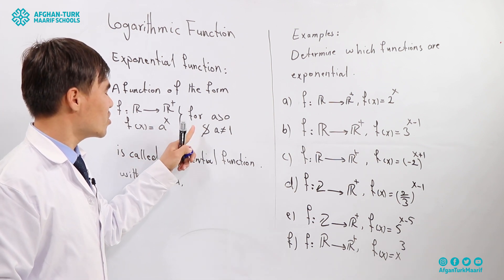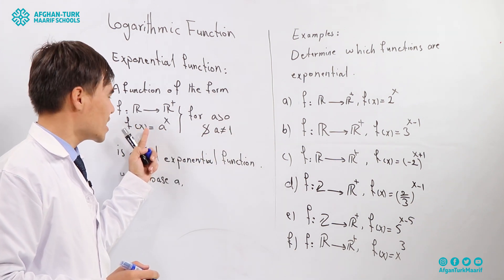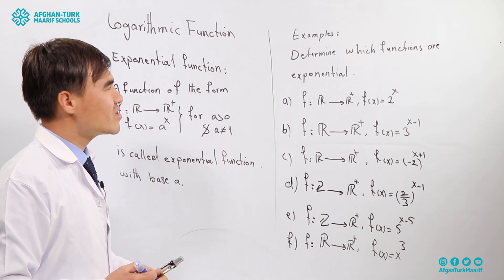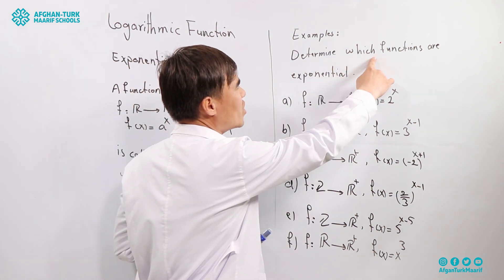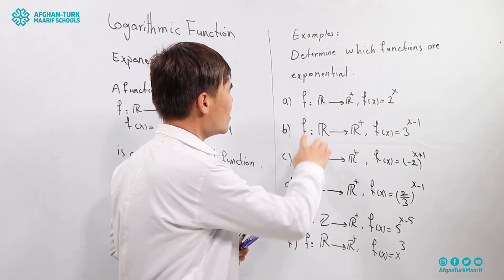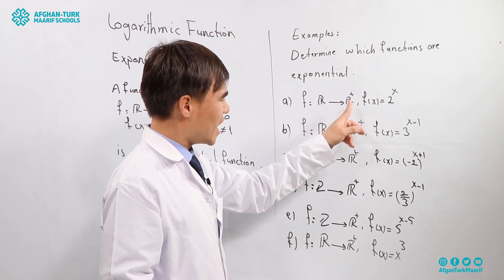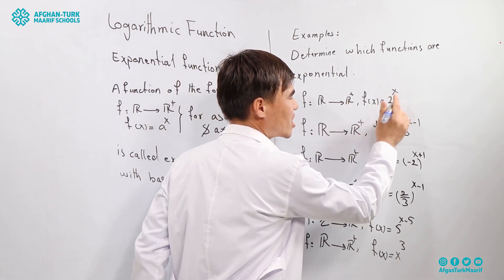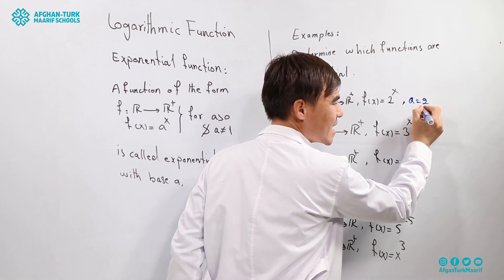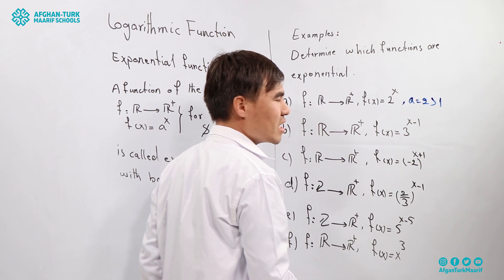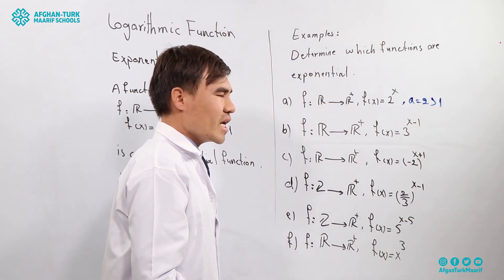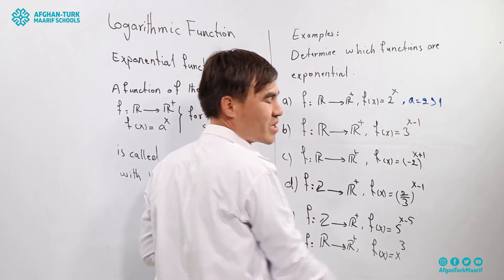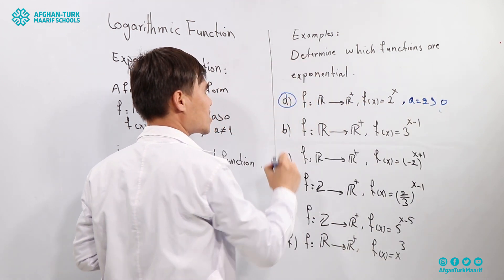Let's check some examples to determine which functions are exponential functions. The first one: f is defined from real numbers to the positive real numbers, and f(x) = 2^x. The base is 2, which is bigger than zero and not equal to one — this is okay for an exponential function. The second one: f(x) = 3^(x-1). The base is 3, bigger than zero and not equal to one — this is also a valid exponential function.